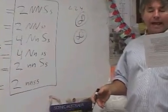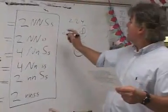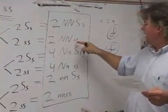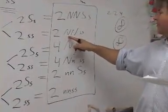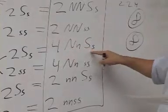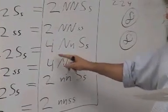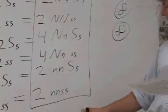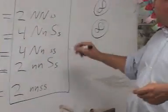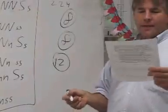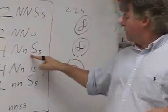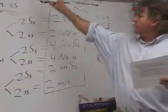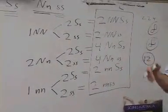Question C asks: how many offspring are heterozygous for at least one trait? These two are heterozygous because they have big S little S. None of the big N big N little S little S group are heterozygous — both traits are homozygous. Moving through: four big N little N big S little S are heterozygous, four big N little N little S little S are also heterozygous for nails, and two little N little N big S little S are heterozygous. The two little N little N little S little S are homozygous, so they don't count. That gives twelve offspring with at least one heterozygous trait. That's how you do question one on genetics problem three using the branching method.